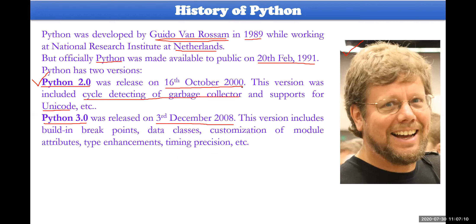The basic difference between these two is that Python 2.0 is nowadays not used — of course the interpreter is available on the internet, but people are not using Python 2.0. People are using only Python 3.0 right now. One of its important features is built-in breakpoints.